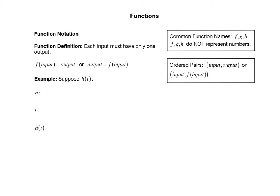In general, function notation always looks like this: you have your function name — whether it's f or something else — and next to that in parentheses you have the input, set equal to the corresponding output. Equality is symmetric, so f of the input could appear on either side of the equal sign. Common function names are f, g, and h — just like common variable names are x, y, and z. These names do not represent numbers; they're the name of the relationship between an input and an output.